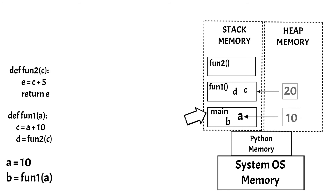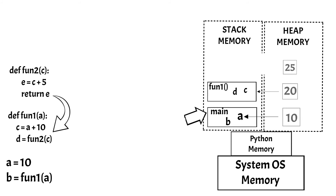Now function2 adds 5 to the input argument, which means that a new value will be created in the heap memory as integer object 25, and it will be referenced to the variable E in the function2 stack. On completion of function2 execution, the returned value is handed over to variable D in the function1 stack. Now the stack frame for function2 is no more required and it is removed from the stack memory.